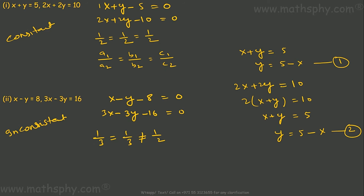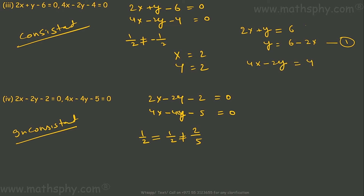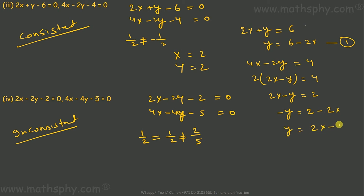Since both equations are the same, this gives coincident lines — meaning infinitely many solutions; x may take any value. For the third pair: 2x + y = 6, so y = 6 - 2x. That's the first equation. The second is 4x - 2y = 4 — dividing by 2 gives 2x - y = 2, so y = 2x - 2. That's the second equation.